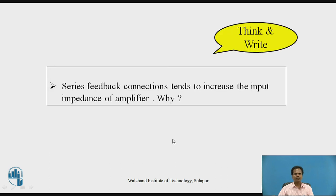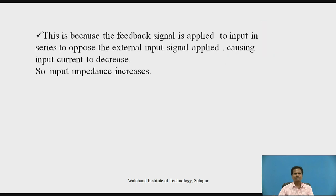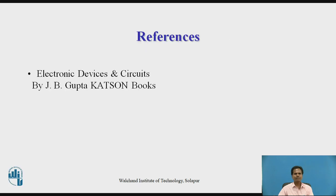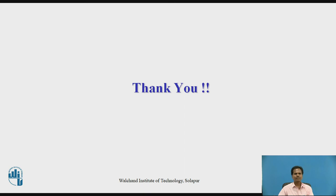Students can pause the video here and think about this question: series feedback connection tends to increase the input impedance of the amplifier — why? The answer is that the feedback signal is applied in series to oppose the external input signal, causing the input current to decrease, so the input impedance of the overall amplifier increases. Thank you.